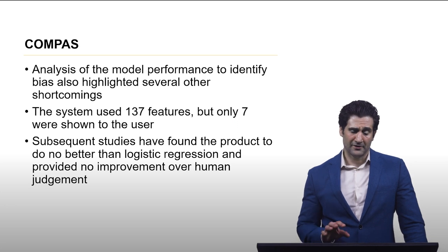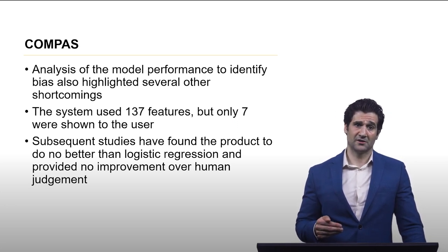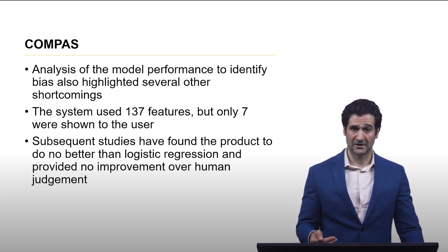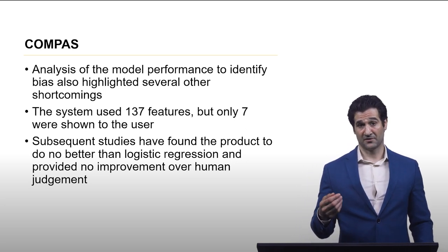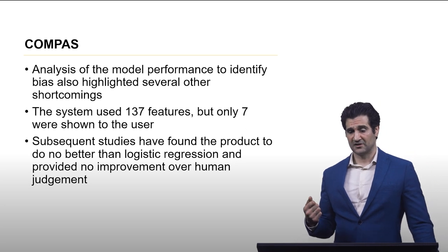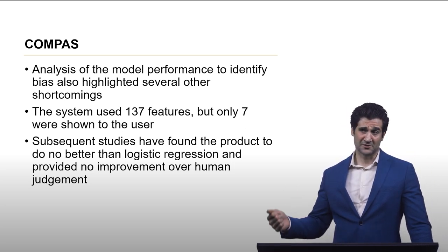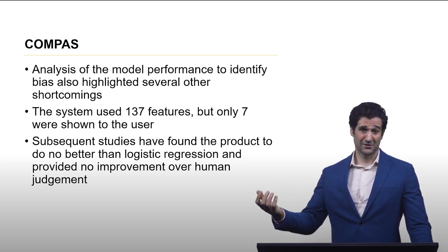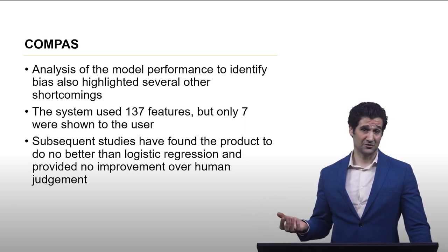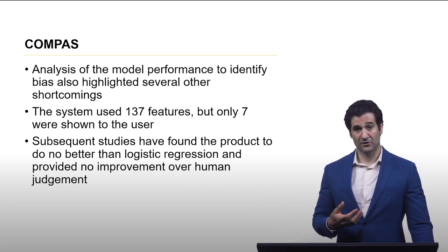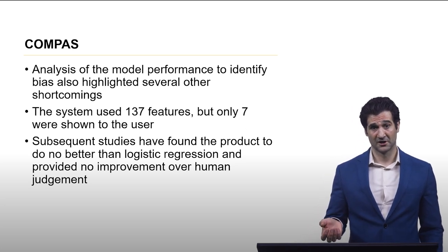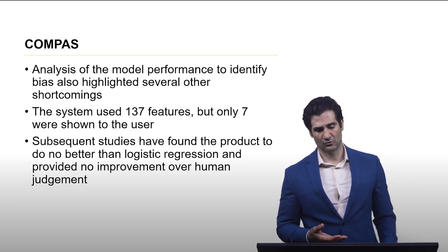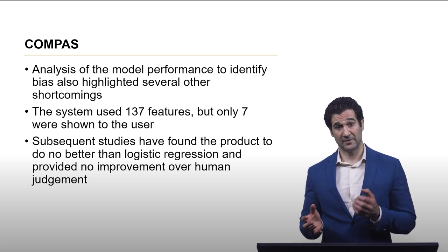One more thing about that is what you can see here with COMPAS, not only with the fact that it was an unfair algorithm but some of these things about it are a little bit interesting from an engineering perspective. First is that it's providing limited information to explain how the results came about. It was supposedly using 137 features but was only showing seven of them to the end user, and so there could have been some other weird combination of features that was leading to a result, and that would be very difficult for a user of the product to determine.